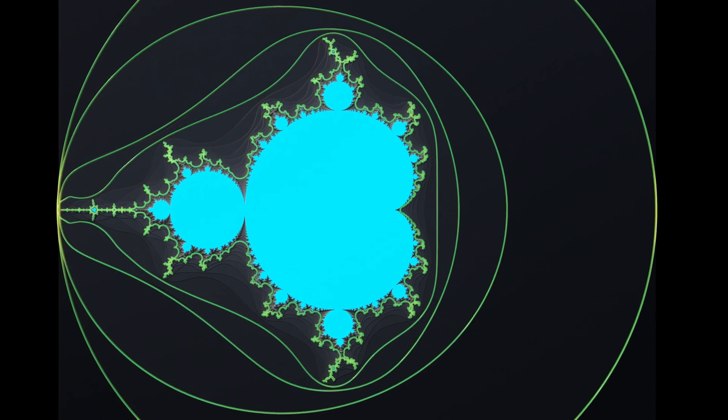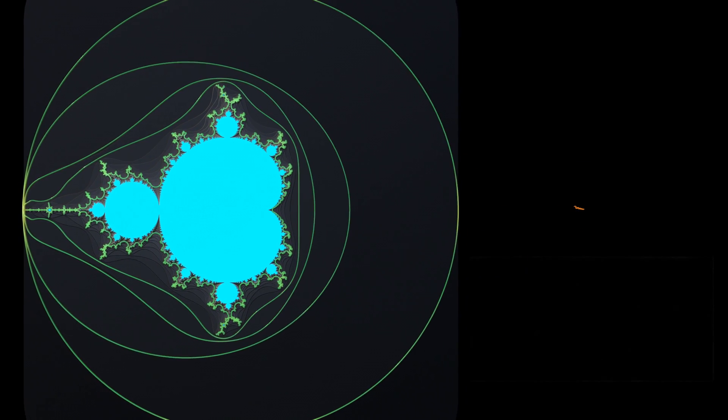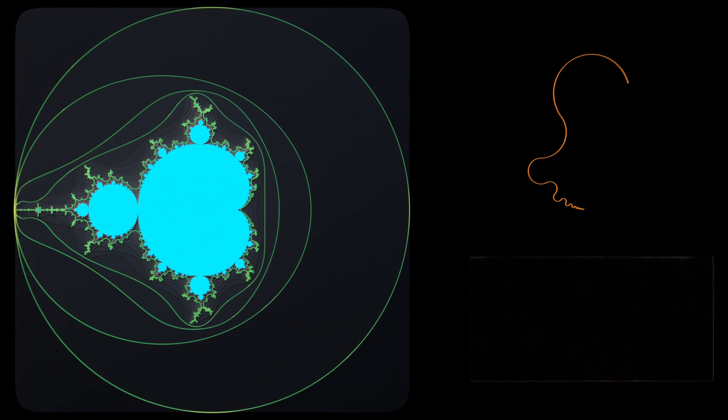When I saw a similar animation for the first time, I immediately wanted to know the answer to the following questions. How is the computation of these curves carried out? What is the origin of these polynomials? And why is the number 2 specifically chosen on the right-hand side?